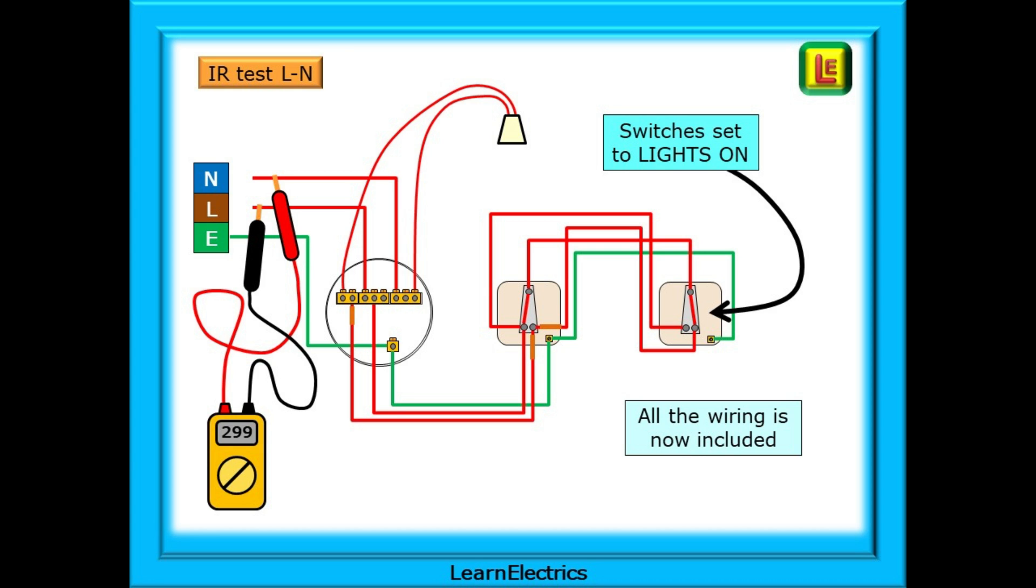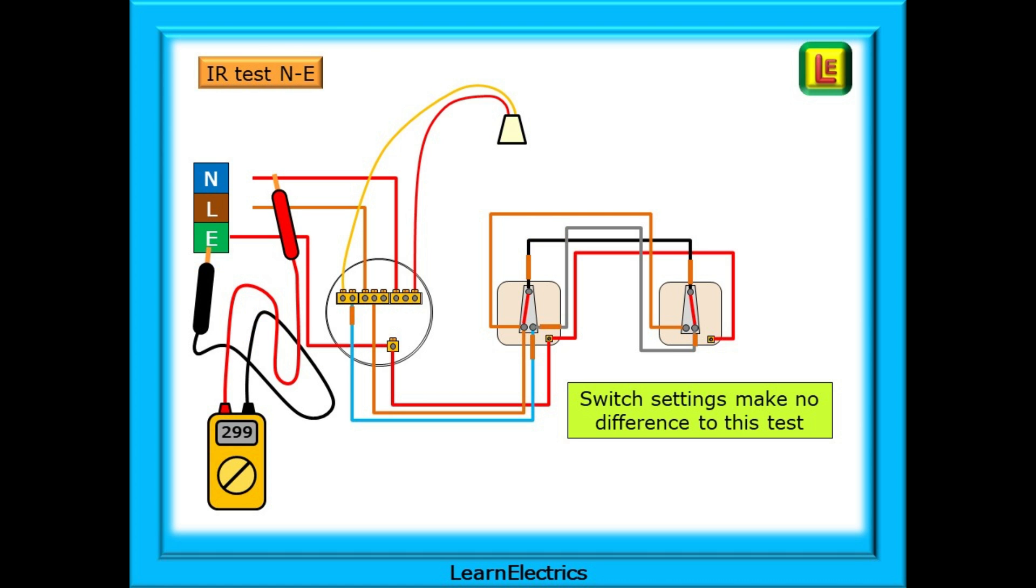Why do this? Because we don't really know if the lights are set to on or off. Can we be really certain? Well no, we can't. This way, we know that one of the tests has included all the wiring. Now we should carry out the same test between neutral and earth. But because neutral is not switched and earth is not switched, the switch settings will make no difference to the readings. So only one test is needed.